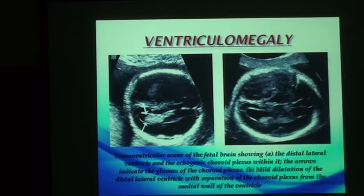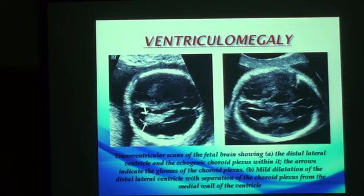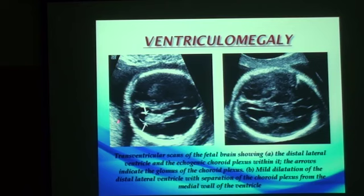Ventriculomegaly is diagnosed prenatally by ultrasound as the first tool. We use the axial transventricular view at the level of the thalami. We measure at the atrium, as previously mentioned. The atrium measurement equal to or more than 10 millimeters gives us the diagnosis of ventriculomegaly. Additionally, we can diagnose ventriculomegaly if there is a distance of more than 3 millimeters between the glomus of the choroid plexus and the medial wall of the lateral ventricle.